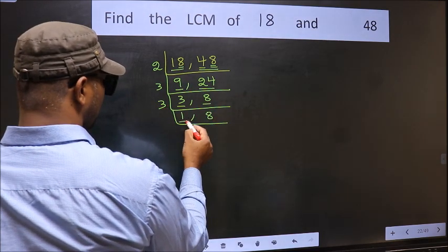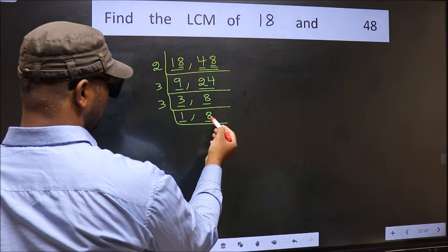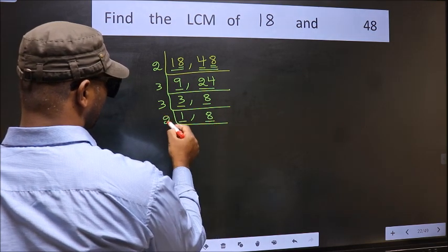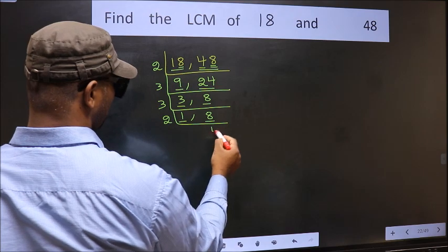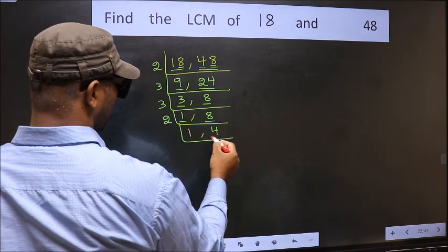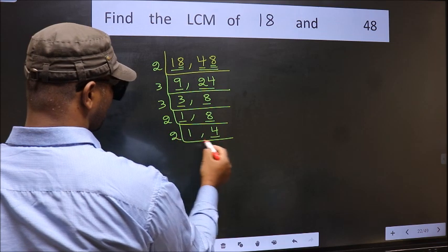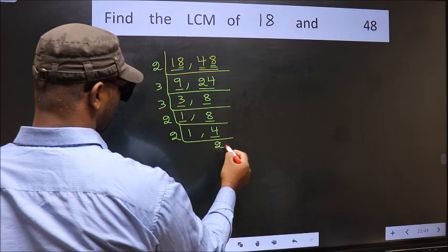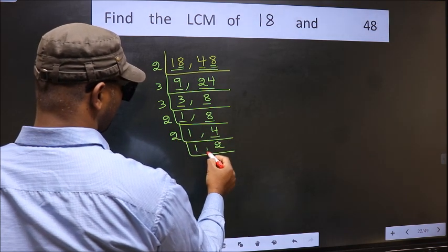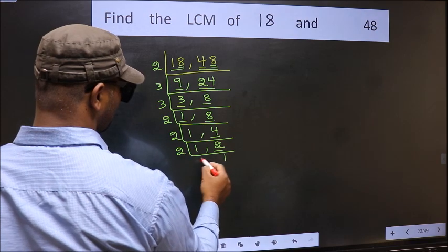Now we got 1 here, so focus onto the other number 8. 8 is 2 fours 8. Now we have 4 — 4 is 2 twos 4. Now we have 2 — 2 is a prime number, so 2 ones 2.